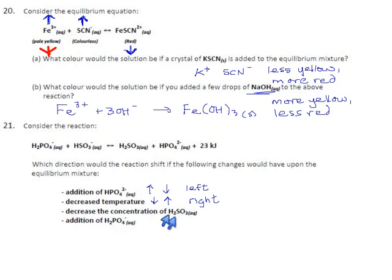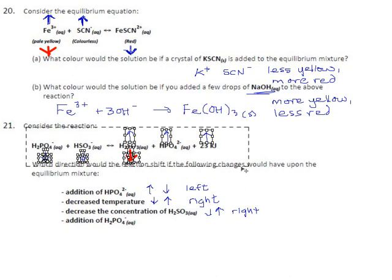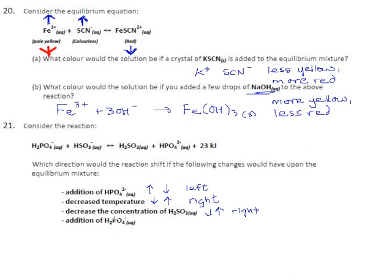If we decrease the concentration of H₂SO₃, the system will try to put it back — it'll make H₂SO₃ and HPO₄²⁻ and heat, while losing HSO₃⁻ and H₂PO₄⁻. So the reaction goes to the right. And if we add H₂PO₄⁻, the system has too much of it and will try to use it up, also consuming HSO₃⁻ at the same time — left side goes down, right side goes up. The reaction goes to the right, the side that it's trying to increase.